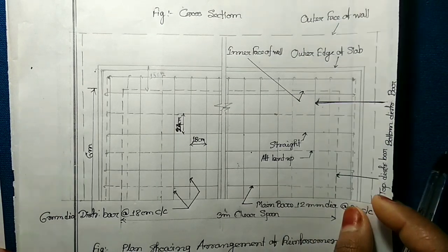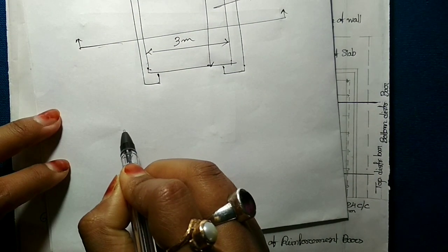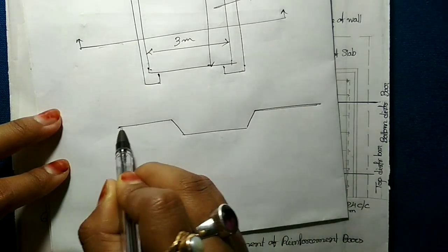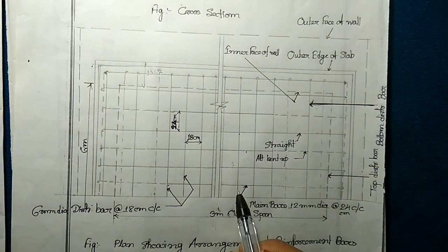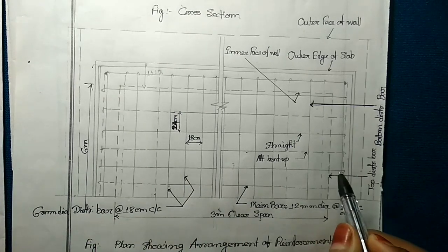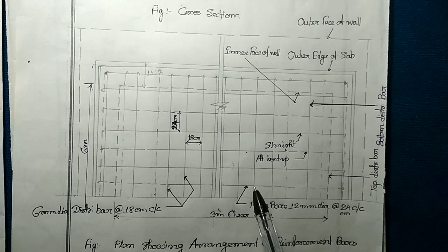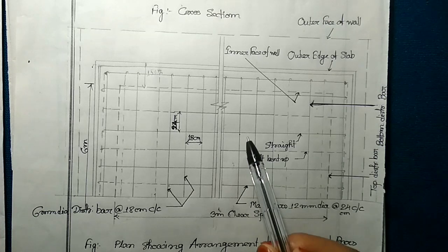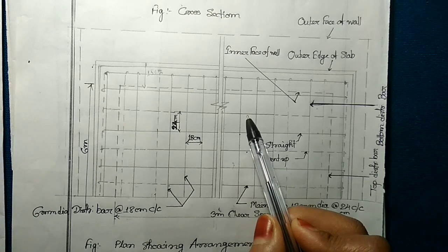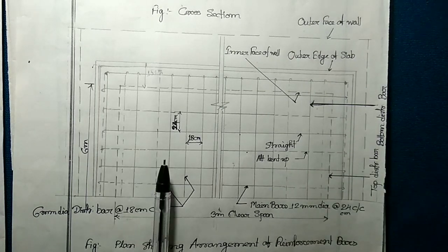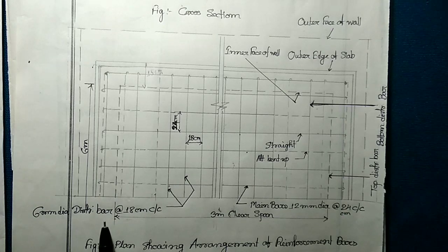We can recognize these as bent up bars, because in a bent up bar one portion is at the bottom and another is at the top. The next bar is a total solid line at the bottom — that is the straight main bar. We give the bent up bar alternately: bent up bar, straight main bar, bent up bar, straight main bar, and so on. These are the main bars, and in the perpendicular direction we have placed the distribution bars.